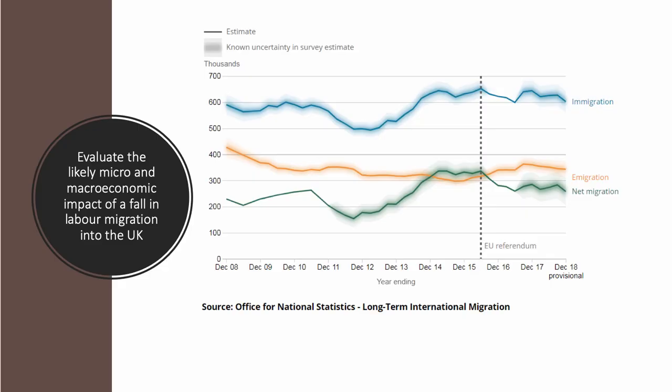Here's the data on migration. Typically an exam is written 12 to 18 months before you actually take it, so data will often have finished in, say, 2017. Long-term international net migration — the balance between immigration and emigration — has broadly remained stable in the UK since the end of 2016. Following the referendum in June of that year, there's been a modest fall in net migration; it still remains over 250,000 per year, but down from over 300,000 in 2015.